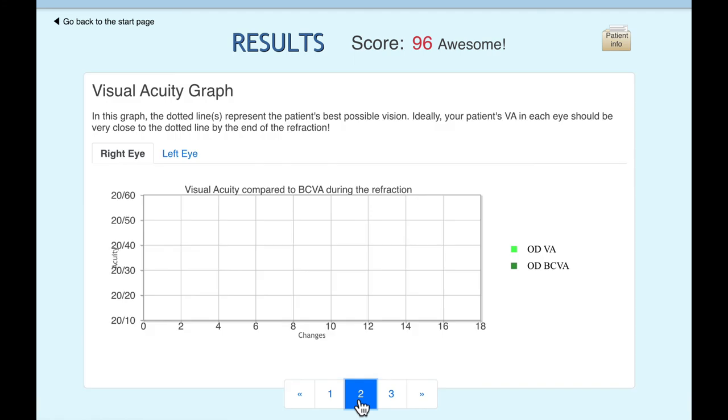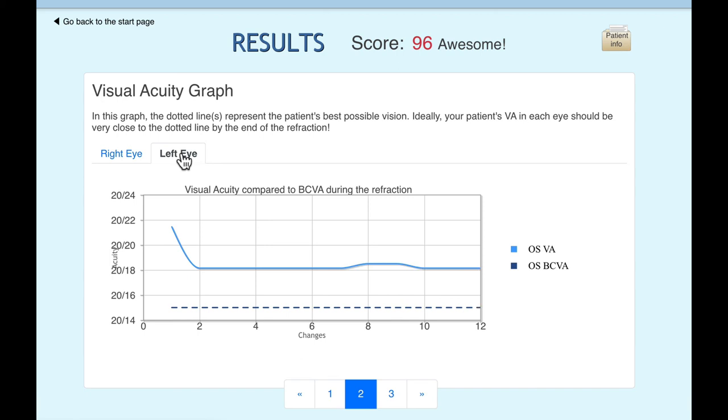Let's look at the visual acuity graphs. So this patient was pretty blurry to start with. It got real clear and then got close to his best-corrected visual acuity throughout the refraction. So that's good. I'm not sure why I didn't get right on that line, but it's very close to it. It's better than 20/20. Left eye, same thing started off blurry. Wait a minute. Why is that so bad? Oh, you know, I need to adjust these graphs because look at this scale. It starts at 20/22 goes down to 20/18. So these graphs can be a little deceiving. So if you're looking at how far you are from this line, make sure you look at the scale too. I have to make that range a little bit larger.